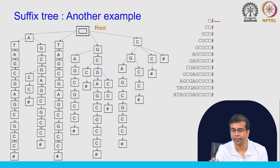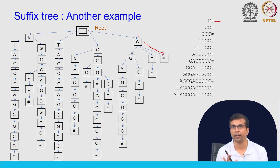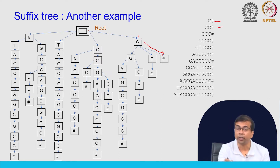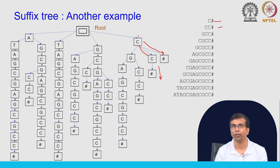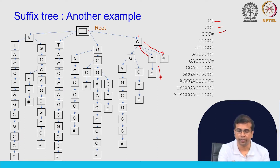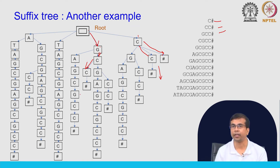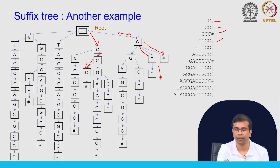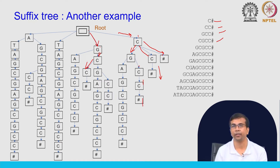We have the first suffix, C#: a path from root to C then hash. The next one, CC# — root to C already exists, so from there we take C and hash to reach the leaf. The next is GCC#: root to G, then to C, then hash. For CGCC#: root to C already exists, but there is no C to G path yet, so we add that node and then G to C, C to hash, reaching the leaf.